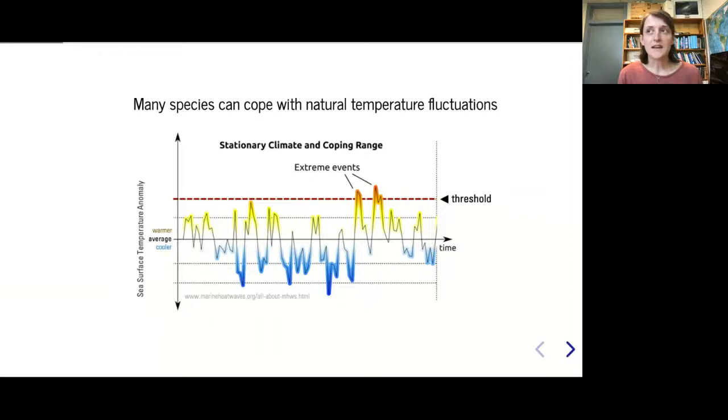Here's a synthetic time series representing sea surface temperature anomaly, deviations from normal. Yellow or red is warmer, blue is cooler. There's no trend in this synthetic series - the chances of a really warm event are just as likely as a cold event. These natural fluctuations have been happening for hundreds of thousands of years and species can cope with that.